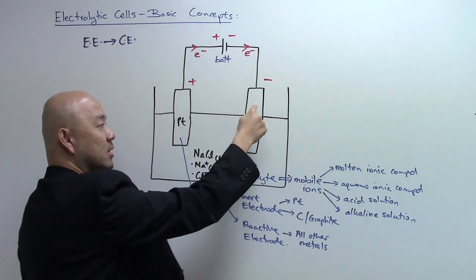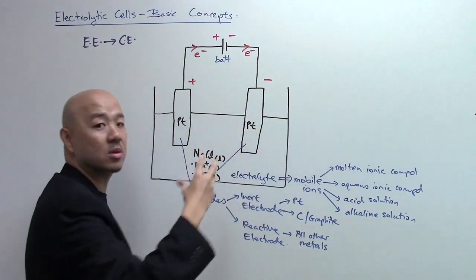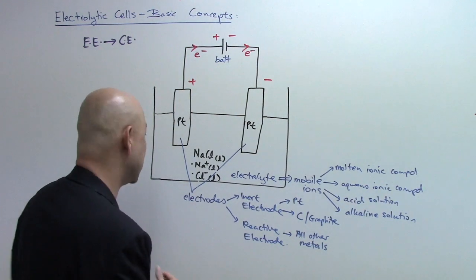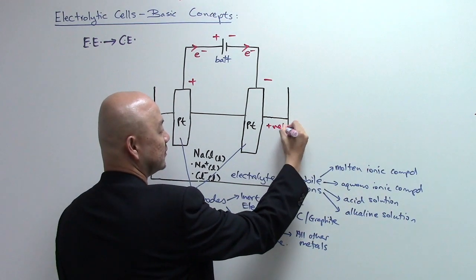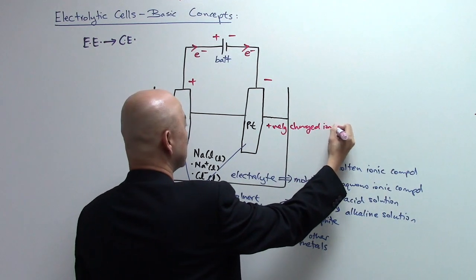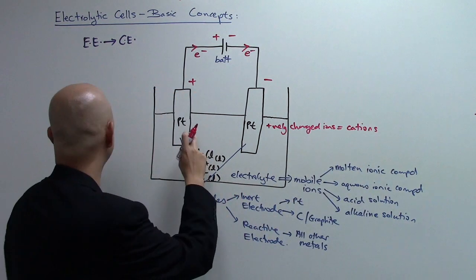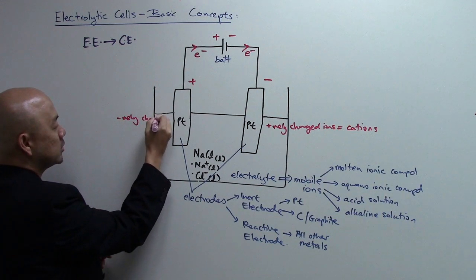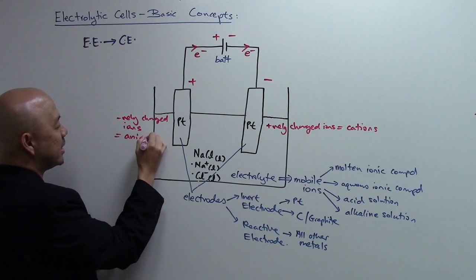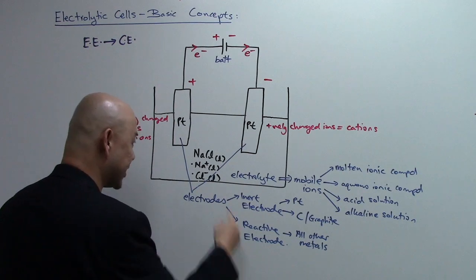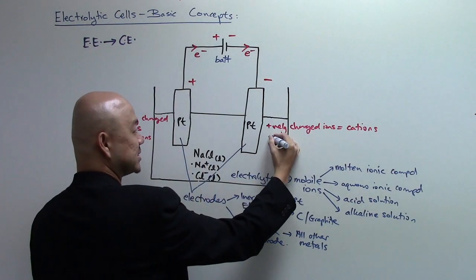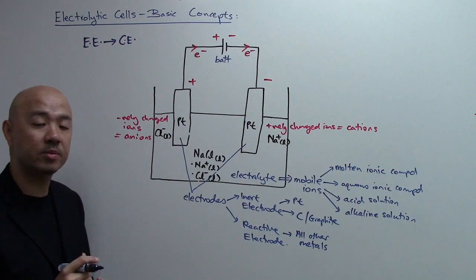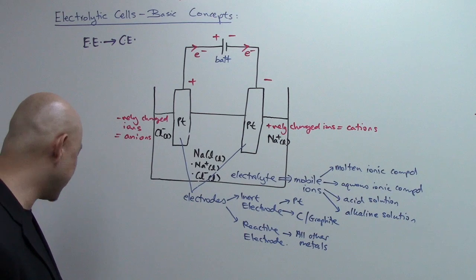This side is a negatively charged electrode, so it will attract the positively charged ions — the cations. On the other side, the positively charged electrode will attract the negatively charged ions — the anions. Using our sodium chloride electrolyte example, the sodium ions (Na⁺) are attracted to the negative side, and the chloride ions (Cl⁻) are attracted to the positive side.